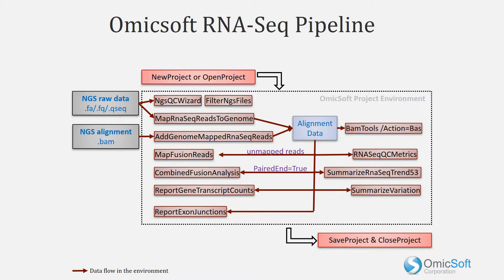Omicsoft's Array Studio contains a suite of modules to perform complete analysis of RNA-seq data. Much of this analysis can be performed with only a few mouse clicks using the RNA-seq pipeline. Starting with raw FASTQ files, data will be used for raw QC, filtering and trimming of reads, then will be aligned to the genome.